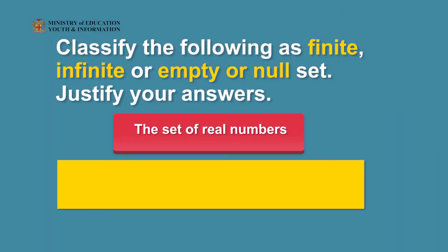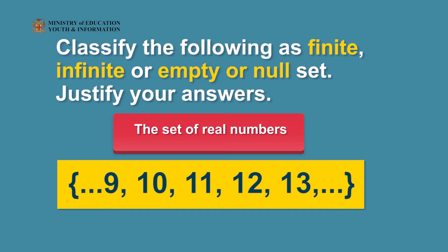Great job, boys and girls! Can you try this last activity? Your Grade 5 class teacher asks you to classify the following as finite, infinite, or empty set and to justify your answers. Firstly, she asks you to list the set of real numbers. The ellipsis at the beginning means there are numbers before 9, and the ellipsis after 13 means there are numbers that can still be listed. It is therefore classified as an infinite set.